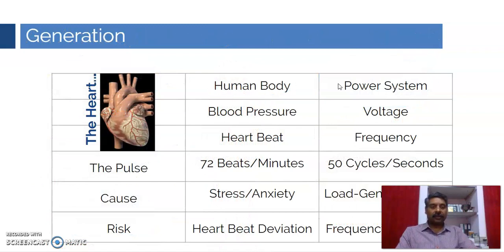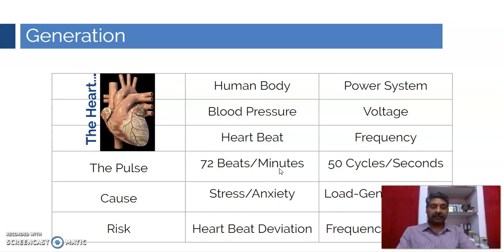The same comparison can be extended further. Blood pressure is analogous to voltage in the case of generation. Heartbeat — the pulse rate — can be compared with frequency, that is, number of cycles per second. A pulse rate of 72 beats per minute can be compared with 50 cycles per second frequency. If there is any change in blood pressure, the pulse rate is going to change. Similarly, if there is any change in voltage levels or any disturbance in the system, then obviously the frequency is going to change.